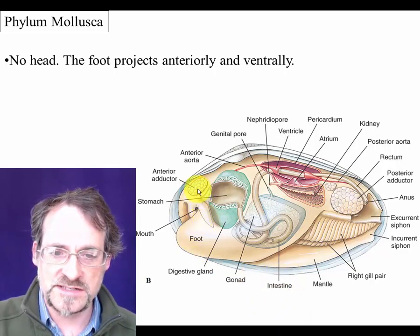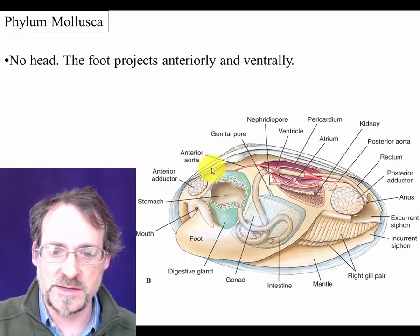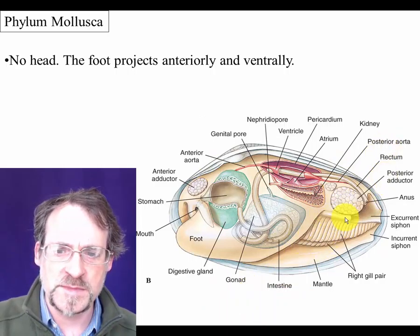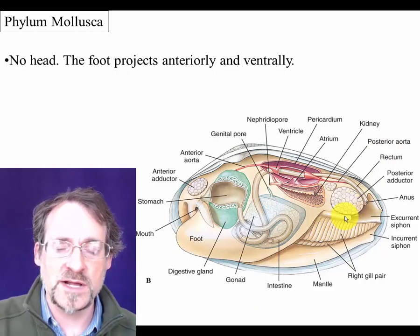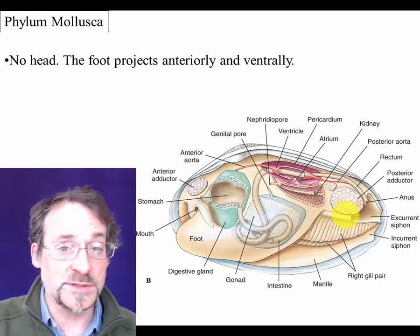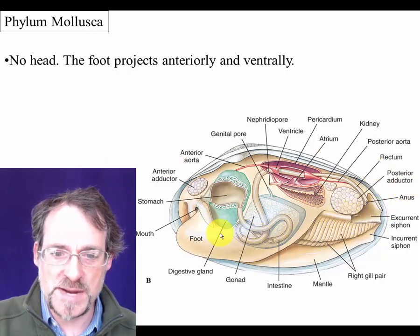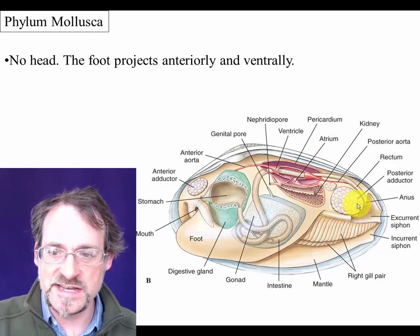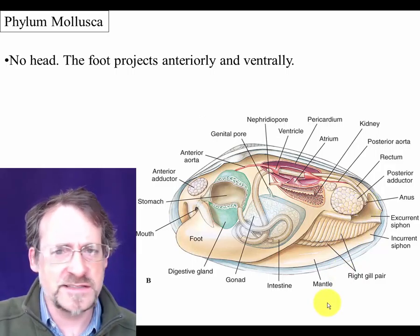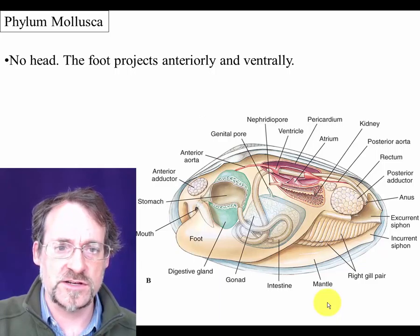This is in fact the anterior end up here and the posterior end over here, but it's really difficult to see that orientation on a bivalve like a mussel. They do have a complete digestive tract — there's a mouth at one end and an anus at the other — but they feed in a radically different way than snails and slugs do.